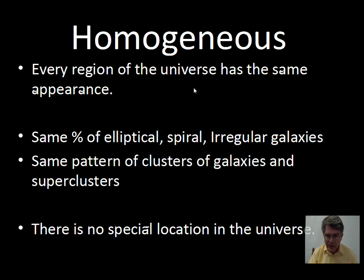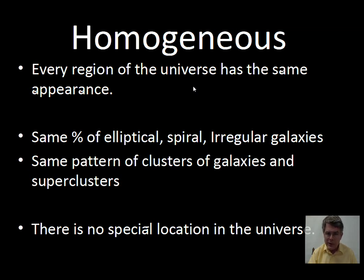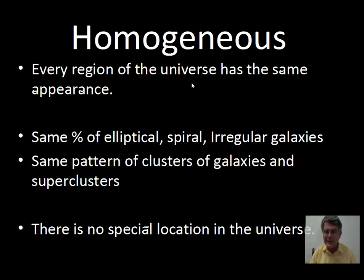Think of homogenized milk — well stirred, all the different density materials mixed in. The homogeneous principle for the universe states that every region of the universe has the same appearance. If we do a count or statistics of elliptical spirals and other types of galaxies, we'll get the same percentage in every section of the universe. Extended to clusters and super clusters, this says there's no unique spot in the universe — no spot is better than another.